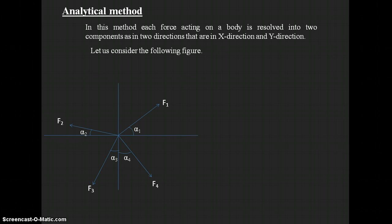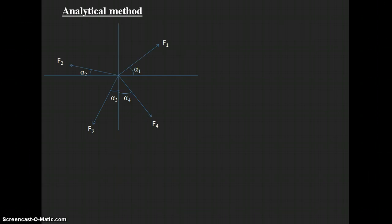Consider the figure here — there are four forces acting at the same point O, each acting at different angles with the horizontal and vertical lines. We need to find the resultant force of these four forces using the analytical method. First, we consider the horizontal and vertical components of F1.